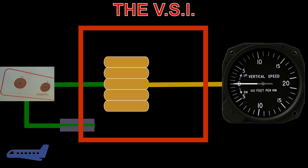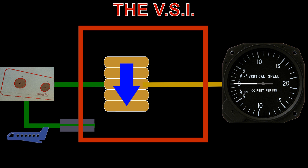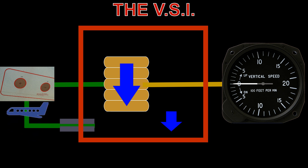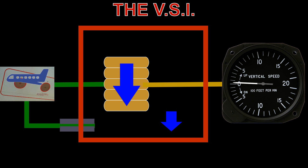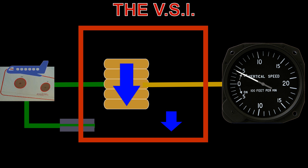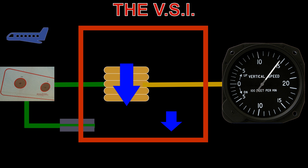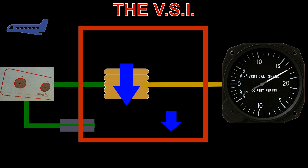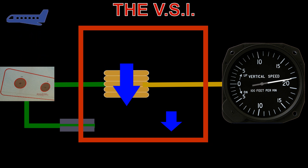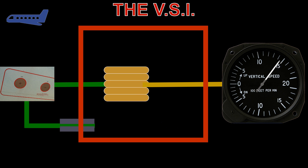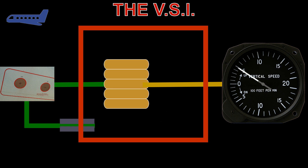Thus, if the aircraft climbs, the pressure within the capsule will decrease, while the pressure within the case will decrease at a lower rate, due to the presence of the nozzle. This will make the capsule contract, and through a mechanism, will cause the needle to show a climb. Once the aircraft has leveled off, the pressures equalize, and the gauge reads zero.